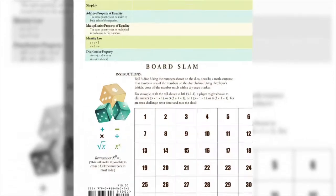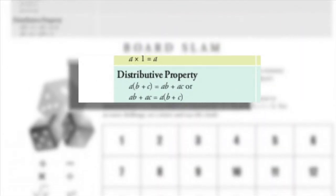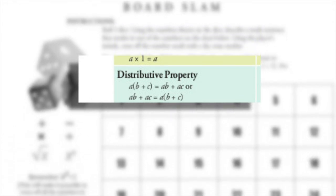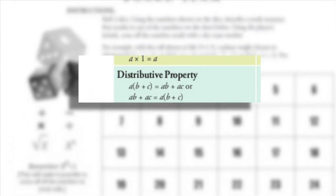Finally, the distributive property is written out to remind students that they can, and will be doing this often, and in both directions. Distributing, and as some students say, undistributing.